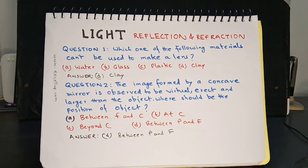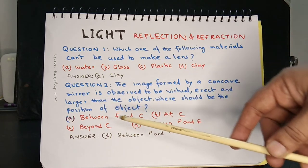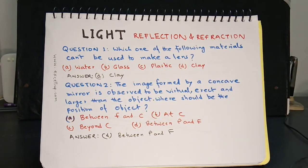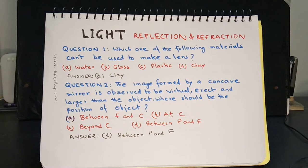Question 2: The image formed by a concave mirror is observed to be virtual, erect, and larger than the object. Where should the position of the object be? Options are: a) between F and C, b) at C, c) beyond C, d) between P and F. The answer is d) between P and F. This can be seen in practice at a barber shop, where barbers use concave mirrors to get an enlarged image of the customer for easier shaving or hair cutting.